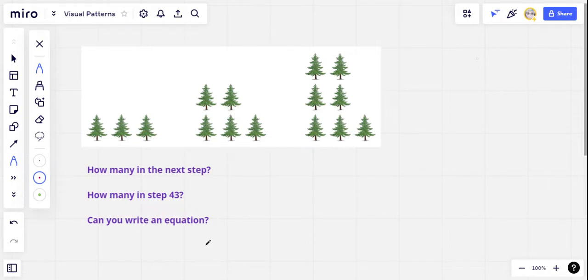And then along with that, can you write an equation that would be able to predict any step, the number of trees in any step? So that's what we're doing today. If you want to accept that challenge, go ahead and pause the video, see if you can work it out.